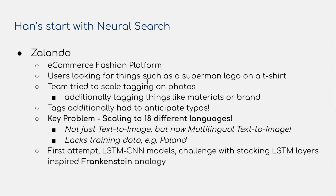He describes users of Zalando trying to look for things like a Superman logo on a t-shirt, and how the team tried to scale this by adding tags to the photos. You'd have symbolic tags like Superman, or materials like cotton and silk, or brands — tags on the images in the e-commerce platform. Then people would search and it would do exact text matching of the search with the tags. Han also describes how they had to include intentional typos in the tags because people search for typos.